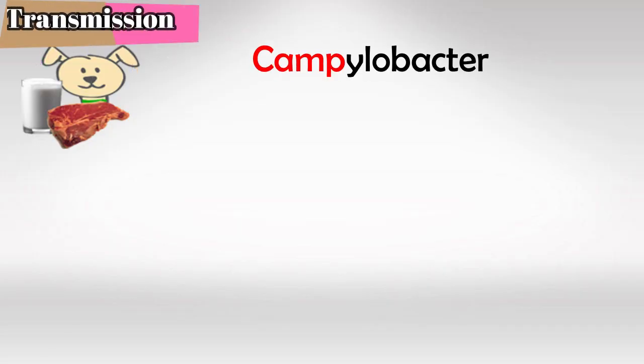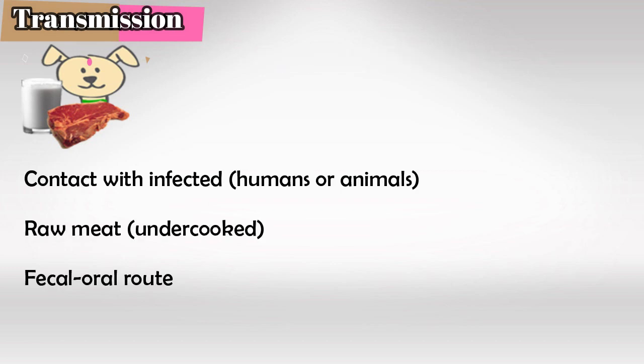To remember the transmission routes of Campylobacter jejuni, I remember the word 'camping.' In camping, we make contact with animals and we usually cook meat, and there is a high chance of fecal-oral route transmission.